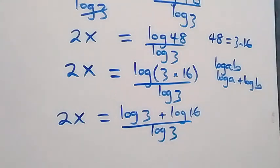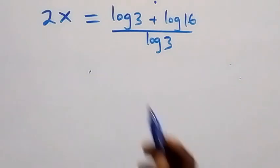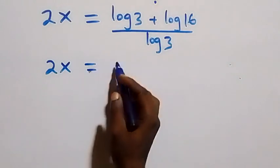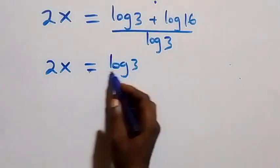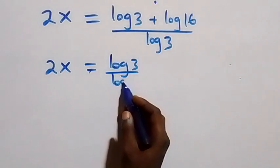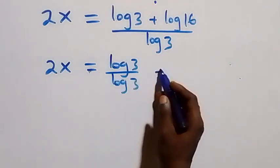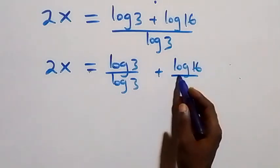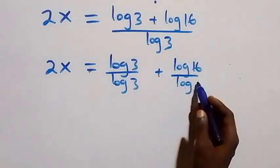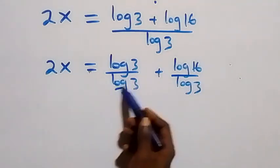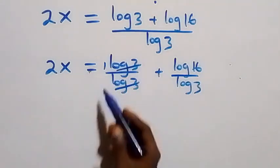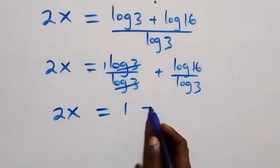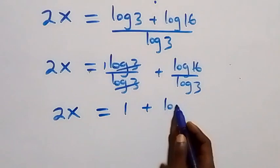From here we separate this into two fractions, and we have two x equals to log three over log three, plus log sixteen over log three. Log three cancels with log three — we have one left. So this becomes two x equals to one plus log sixteen over log three.